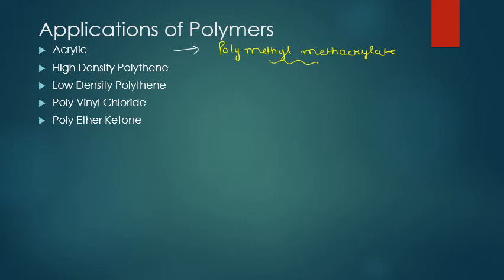High-density polythene, also called HDPE, is used quite significantly because it is very cheap and acid-resistant — it is strong. If you want to soften it, you require around 120 degrees Celsius. It is used for kitchen equipment, children's toys, and fabric filaments, all because of its high density.